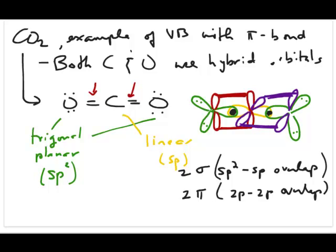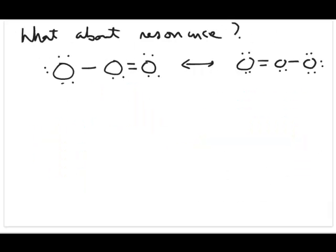That completes your drawing. This is really something important to understand: anytime you have an sp orbital, you're always going to have two p orbitals that are not used during hybridization, and those p orbitals might be used to form pi bonds.